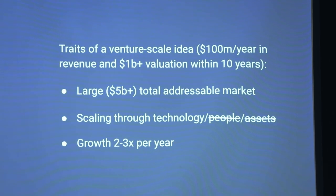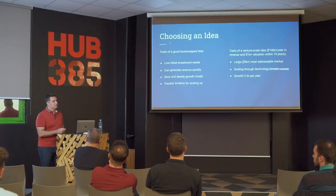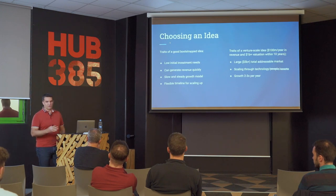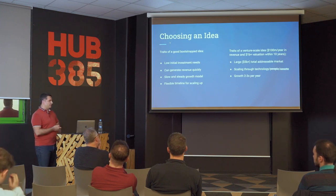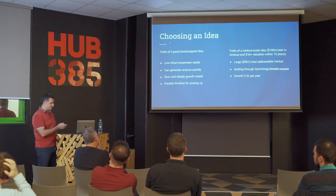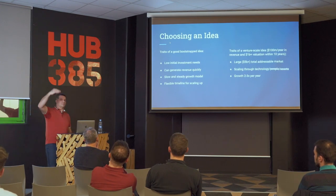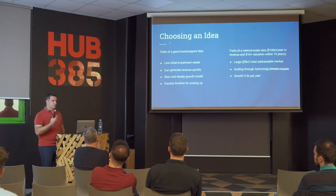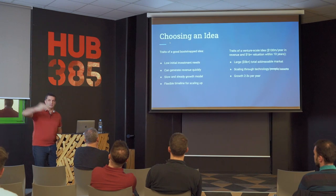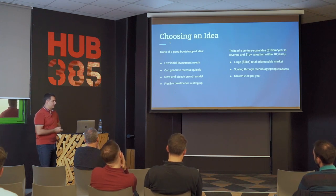Instead of slow and steady growth, VCs need the opposite — you need to show that you can grow two to three times per year for multiple years for them to invest. To be clear, I'm not talking about what you need to have already achieved — they need to see this potential in front of you. They need to know: can this idea scale and grow two to three times for the next 10 years? Not that you've already scaled two to three times per year for the last 10 years.